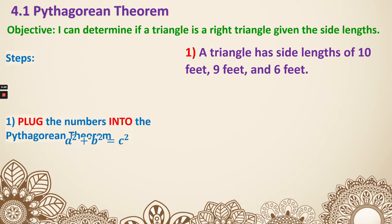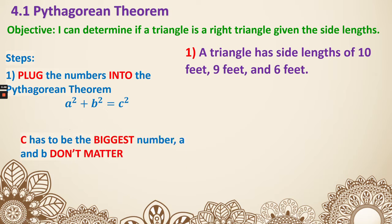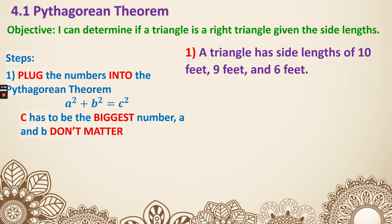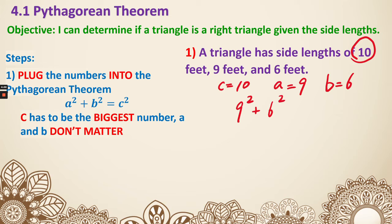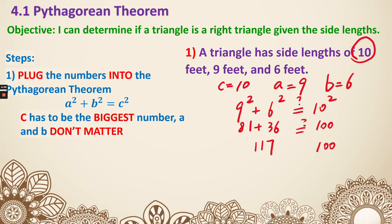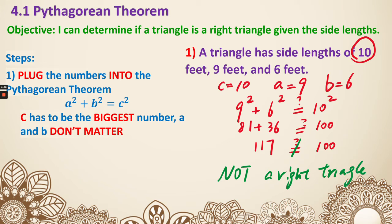Now let's look at another example — same steps. Plug the numbers into the equation, and C has to be the biggest side. We identify our C first: 10 is the longest, so C is 10. A is 9 and B is 6. Now I put them in the equation: 9 squared plus 6 squared on the left side — I don't know if it equals the right side, which is 10 squared. The left side is 81 plus 36, which is 117. The right side is 100. They are not equal, so again, not a right triangle.